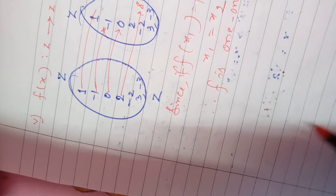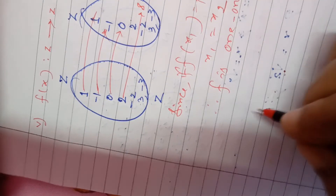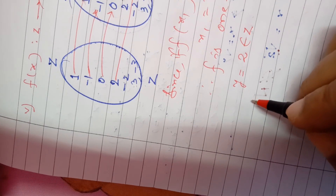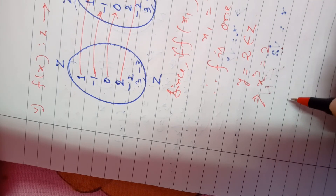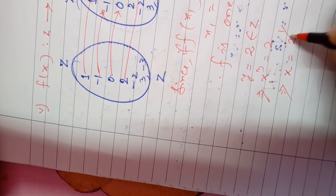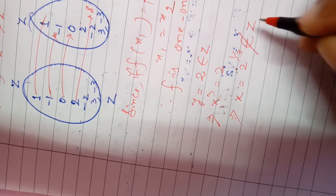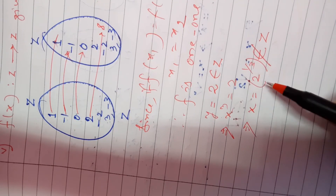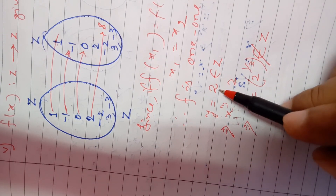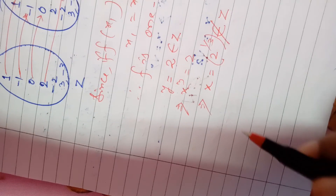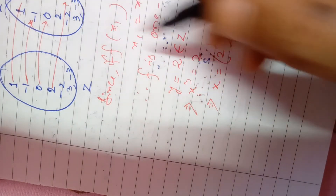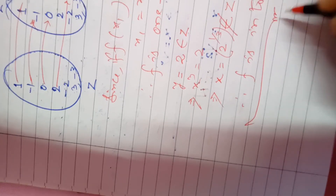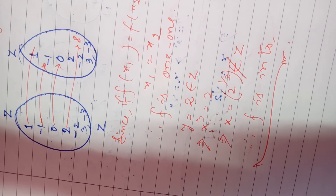Now checking onto or into for f: Z→Z, f(x) = x³. Take y = 2 from the co-domain Z. Then x³ = 2, so x = 2^(1/3), which is not an integer. So 2 has no pre-image in Z, meaning there are many elements in the co-domain whose pre-images are not found in the domain. Therefore f is into.